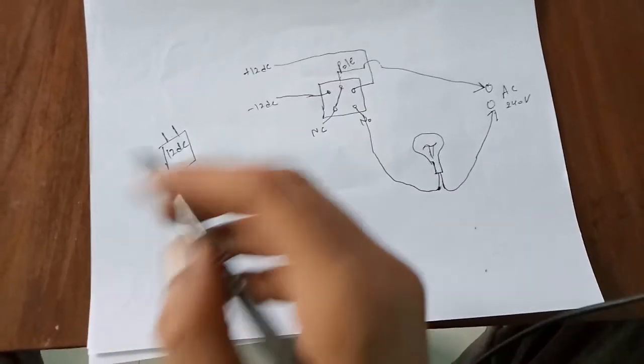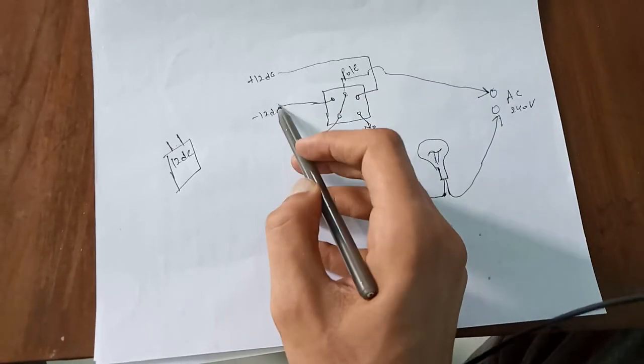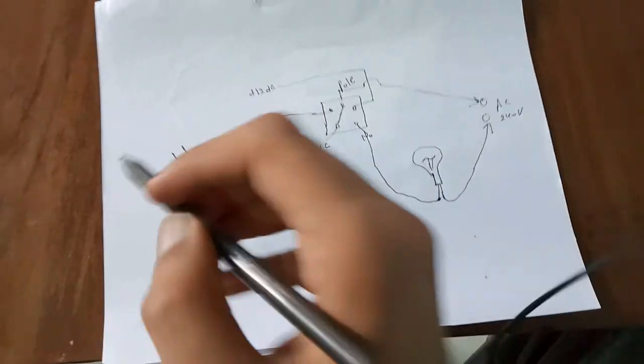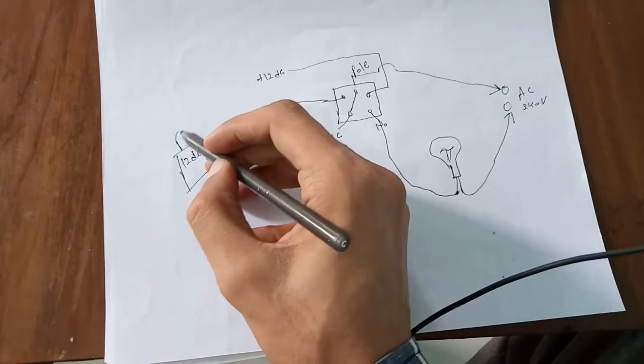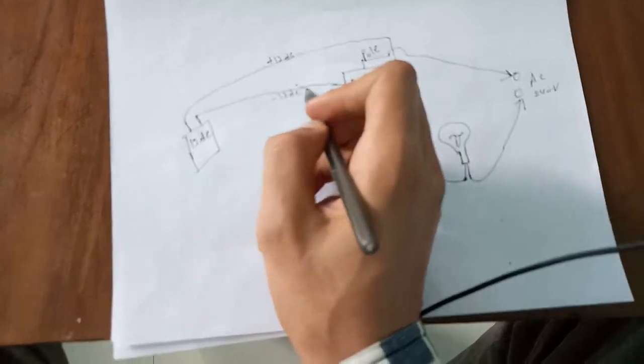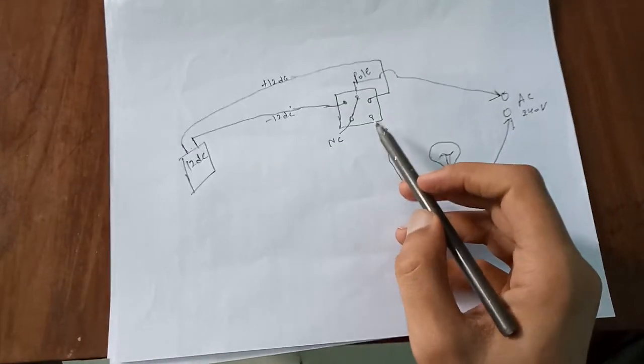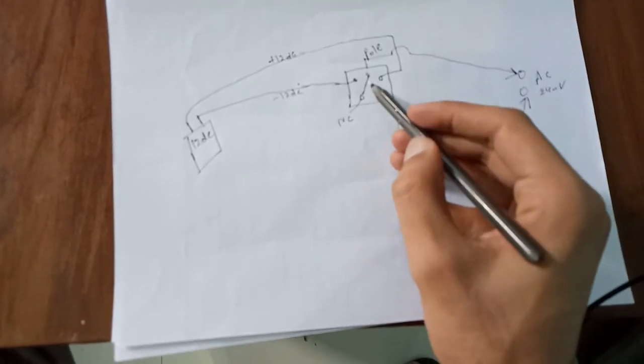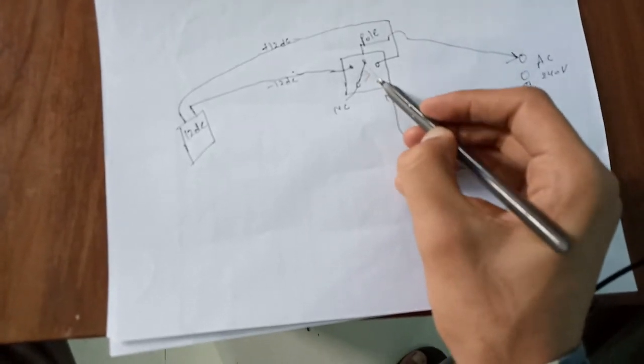To make the complete circuit, what I have to do is flow DC current through these terminals. As I will connect my DC battery to these terminals, electromagnetism will start in relay and this wire will shift to normal open.